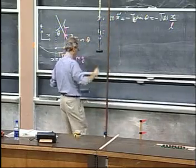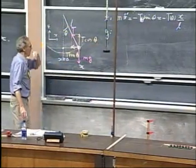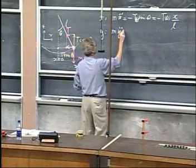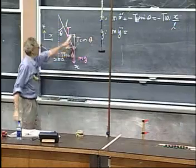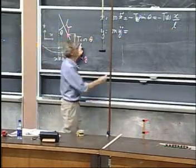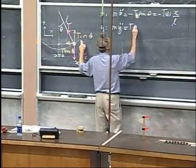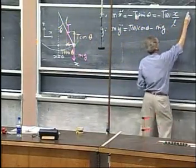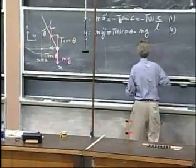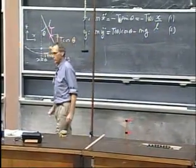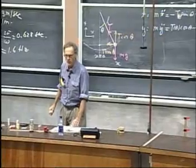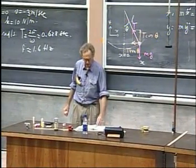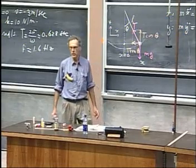Now the y-direction. In the y-direction, I have M y double dot equals T cosine theta minus mg. This is equation one, and this is equation two. So now we have to solve two coupled differential equations, which is a hopeless task. It looks like a zoo, and it is a zoo.